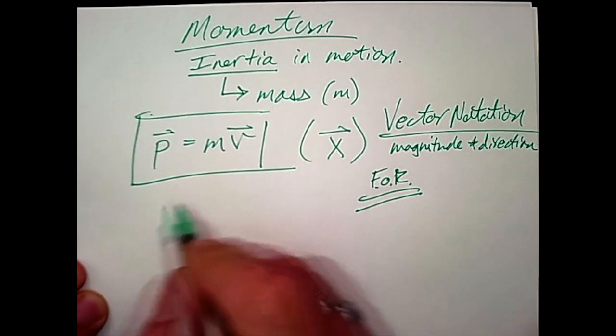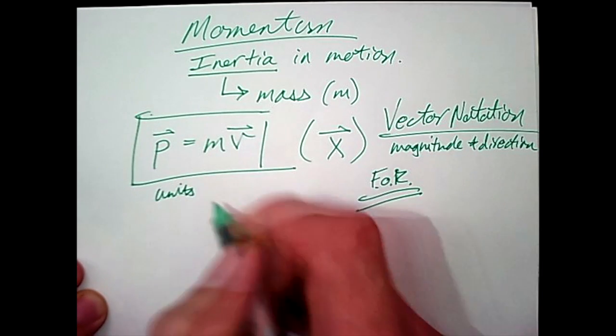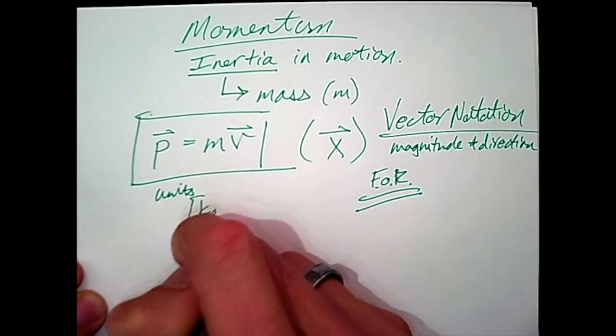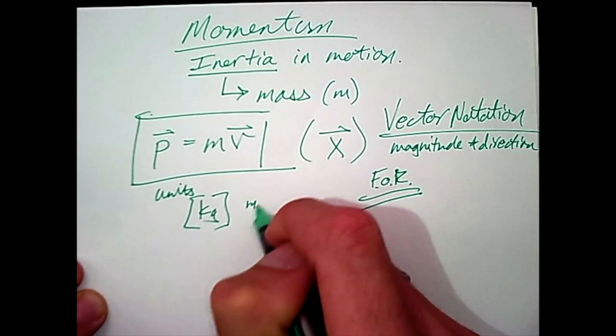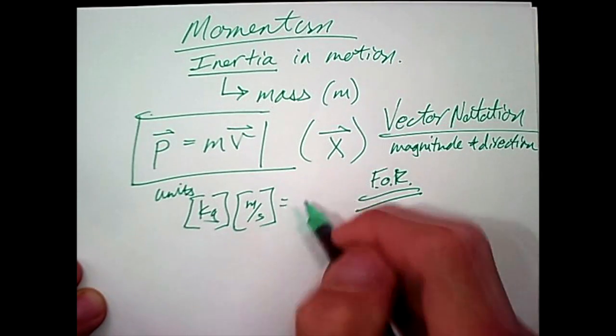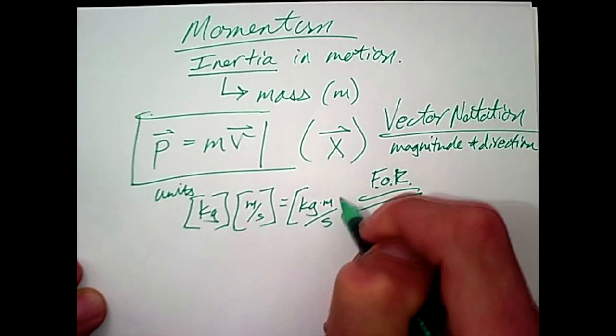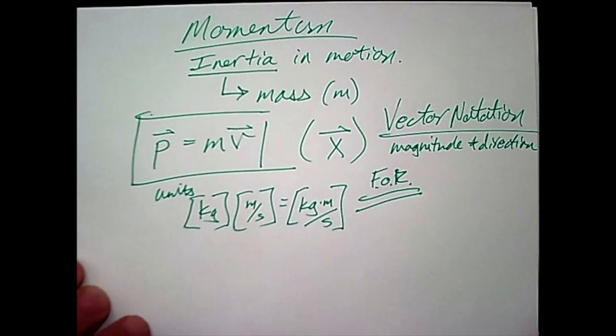As a side follow-up, momentum itself in terms of units is going to be kilograms for mass times meters per second for velocity, which means that the units for momentum are simply those two things multiplied together: kilograms times meters divided by seconds. Unfortunately, in this particular field, there is no complex unit that combines all those things into one word. And so you'll just maintain kilograms meters per second for every calculation when you do momentum.